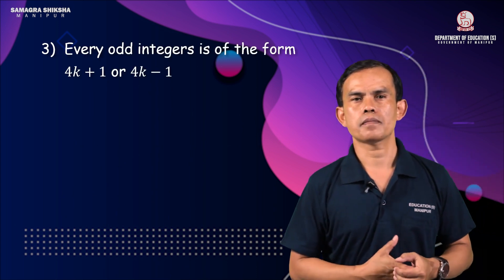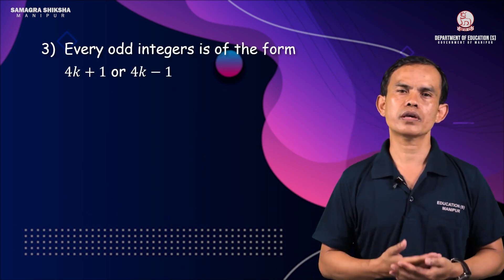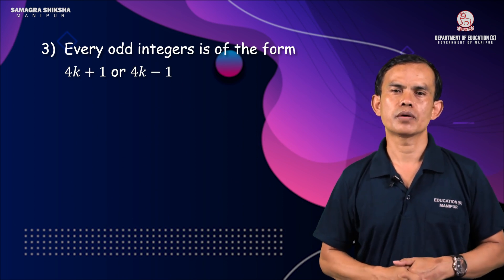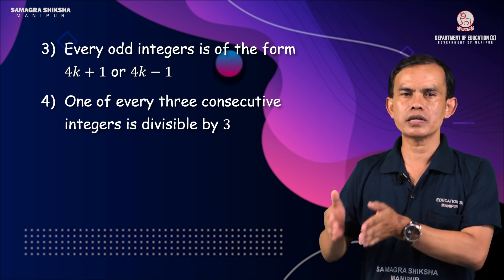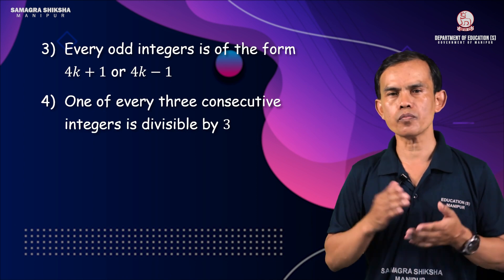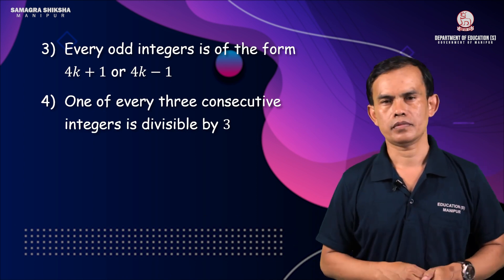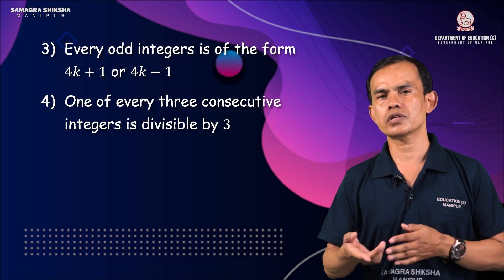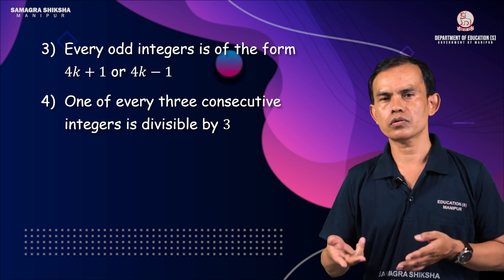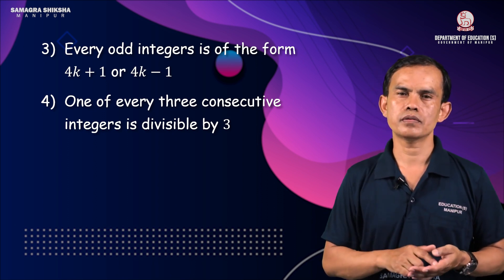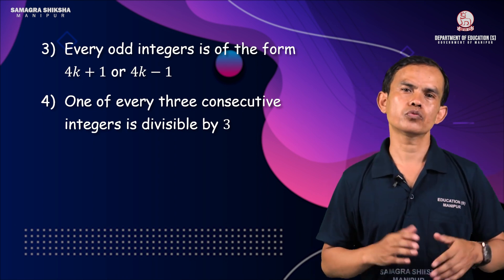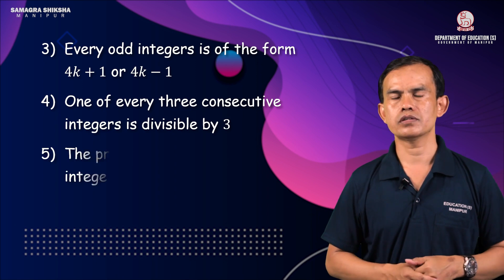Every odd integer is of the form 4q+1 or 4q−1. Also, 1 of every 3 consecutive integers is divisible by 3. For example, consecutive sets like {1,2,3}, {2,3,4}, {3,4,5}, {4,5,6} — each set contains one multiple of 3. The product of 2 consecutive integers is divisible by 2.